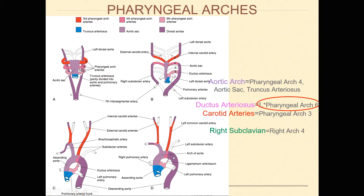This is the last end of the heart tube before it attaches to the pharyngeal arches above. Following that you have pharyngeal arch four, shown in hot pink here — a very small section that ends up being in between your left common carotid and your left subclavian artery. Following that, you just have a descending aorta.